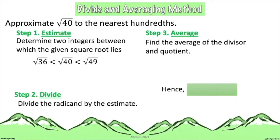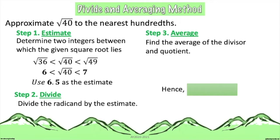Get the square root of the two perfect squares at the beginning and end of the inequality. The square root of 36 is positive 6 and the square root of 49 is positive 7 in terms of the principal square roots. This means the value of the square root of 40 is greater than 6 but less than 7 — somewhere around 6-point-something. For step 1, we use 6.5 as our estimated number.